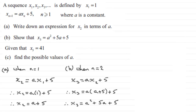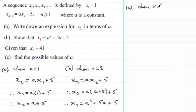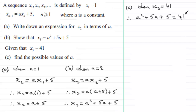For part c, we're given that x3 is 41 and we've got to find the possible values of a. Setting x3 equal to 41 means a squared plus 5a plus 5 must equal 41. So I subtract 41 from both sides, giving a squared plus 5a minus 36 equals 0.